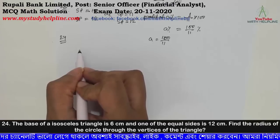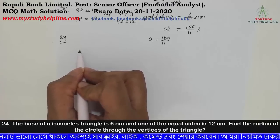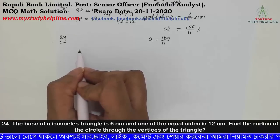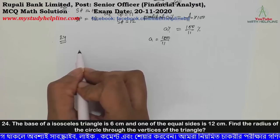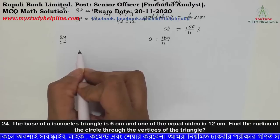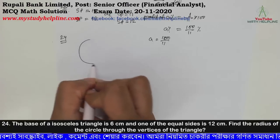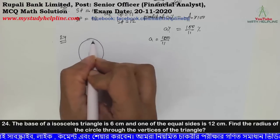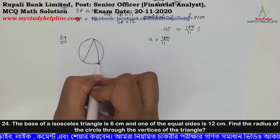The base of an isosceles triangle is 6 centimeters. One of the equal sides is 12 centimeters. Find the radius of the circle through the vertices of the triangle. So A is our isosceles triangle where the base A is 6 centimeters.